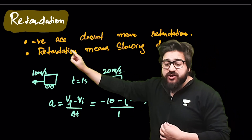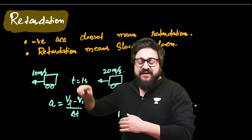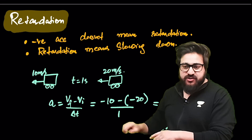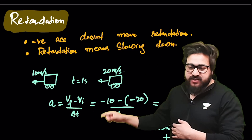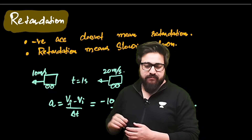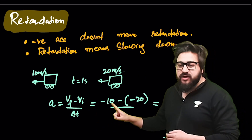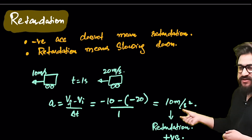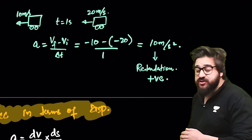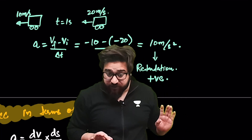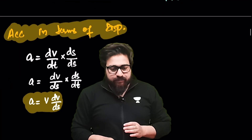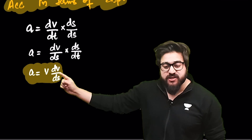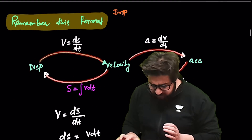Now, retardation. Negative acceleration does not necessarily mean retardation — retardation simply means slowing down. For example, if a car moves backward at 20 m/s and slows to 10 m/s, the final velocity is −10 and initial velocity is −20. Acceleration = (−10) − (−20) = +10, which is positive, yet this is retardation because the car is slowing down. So retardation can be positive or negative.